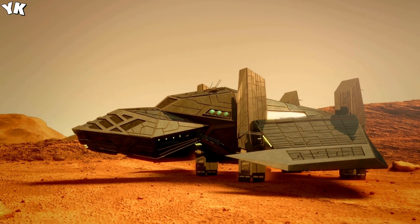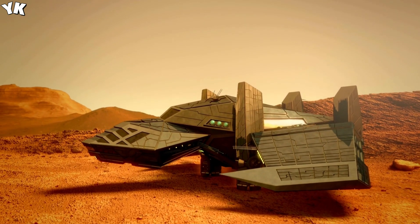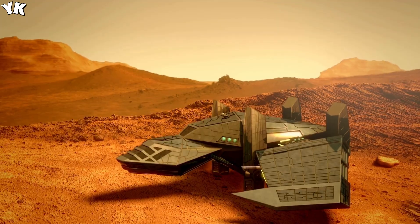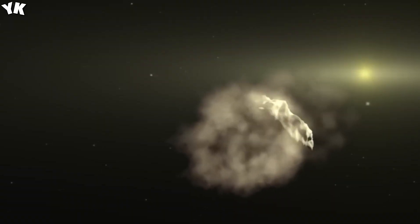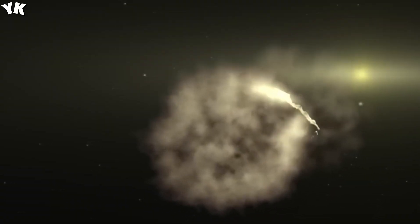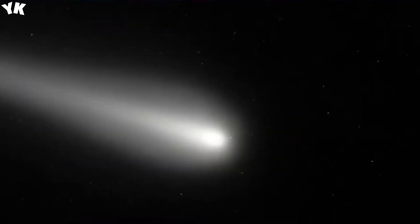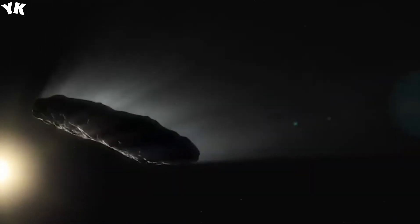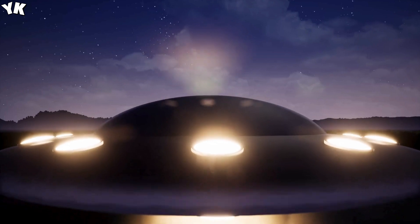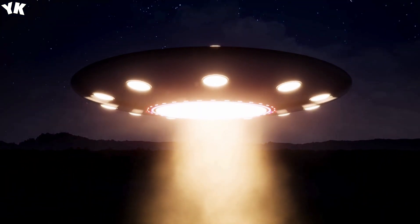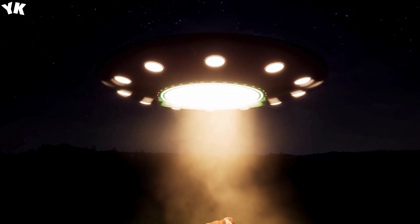These options range from Oumuamua orbiting our galaxy for billions of years to traversing hundreds of thousands of years over 20 star systems to reach us. While this journey may seem extensive, it pales in comparison to the age of our galaxy, approximately 10 billion years old, housing around 200 billion stars. Oumuamua's travel time, although considerable, underscores the vastness of the cosmos.